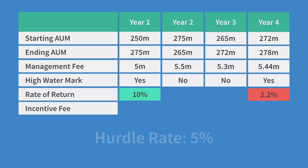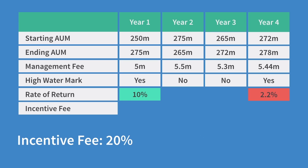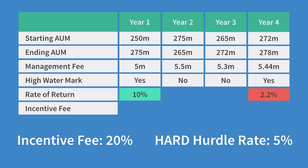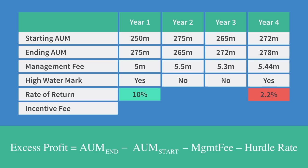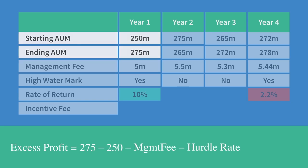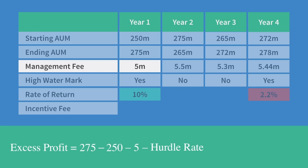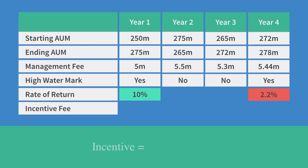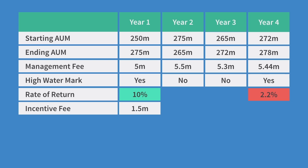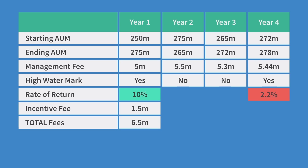The last step is to actually calculate the 20% incentive fee for year 1 — the only year in which an incentive fee was actually paid. Remember we have a hard hurdle rate of 5%, which means we only earn incentive fees for profits earned above the target. First we need to calculate what excess profit was actually earned. This is given by the change in AUM — 275 minus 250 — minus the management fee of 5 million. Since we have a hard hurdle rate, we then take away the hurdle rate, calculated as 5% of the starting AUM. So the excess profit comes to 7.5 million. 20% of that figure is our incentive fee, which is 1.5 million. Be careful in the exam about what you are actually asked for — the total fees charged each year will pull some students into the trap of forgetting the last step: adding the management fee to the incentive fee.